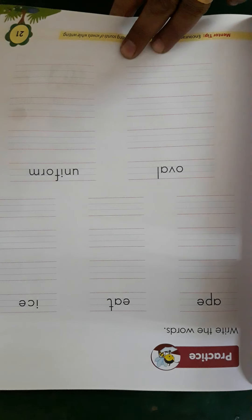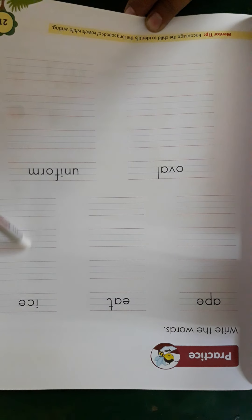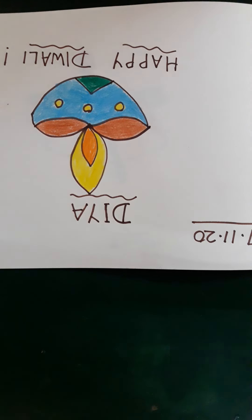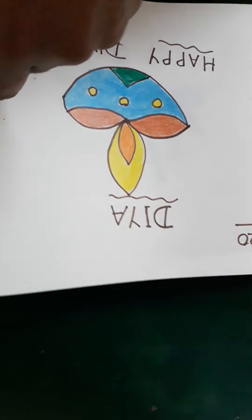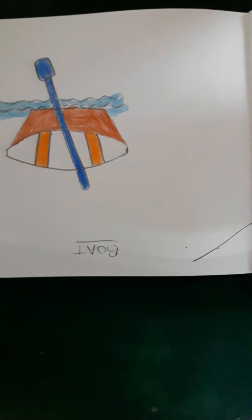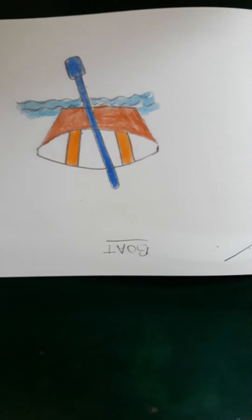Right students. Ab yeh dekhiye — ismein aapko yeh words likhne hain, main aapko cursive mein likhne ko kehungi. Ok students, drawing mein dekhiye — we have already done diya, happy Diwali. Yeh bhi aapne complete karna hai drawing page mein. And then we did boat — ab boat mein maine aapko kaha tha ismein yellow karna hai. So aaj hum karenge new picture — that is fish. Aaj hum kya sikhenge — fish.